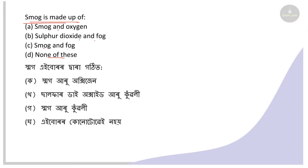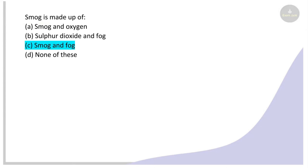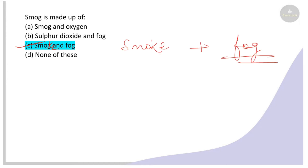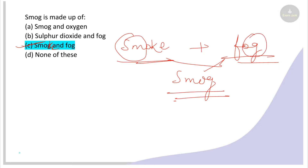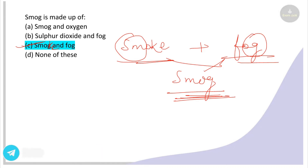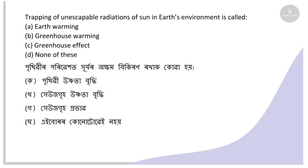Next: Smog is made up of what? Options: smog and oxygen, sulfur dioxide and fog, smog and fog, none of these. The right answer is smog and fog. Smog is a combination of smoke and fog — don't forget that smog is smoke plus fog.